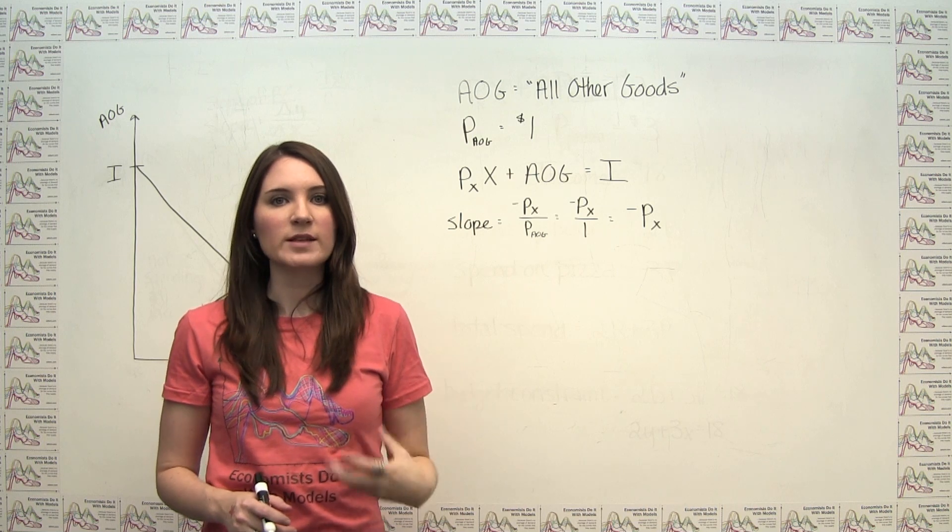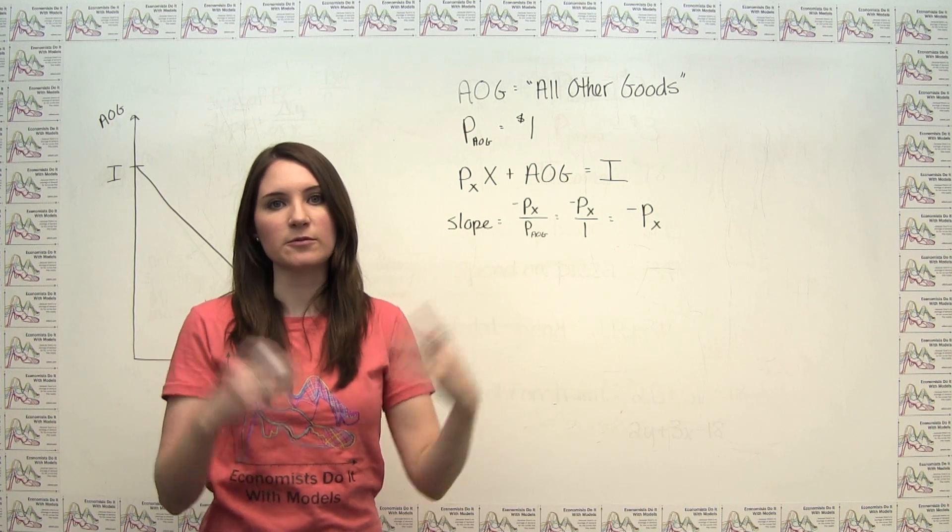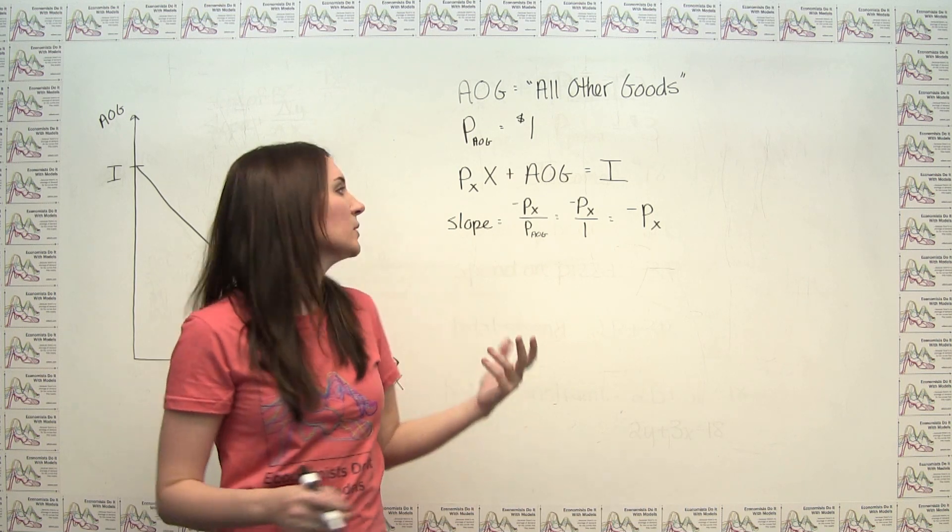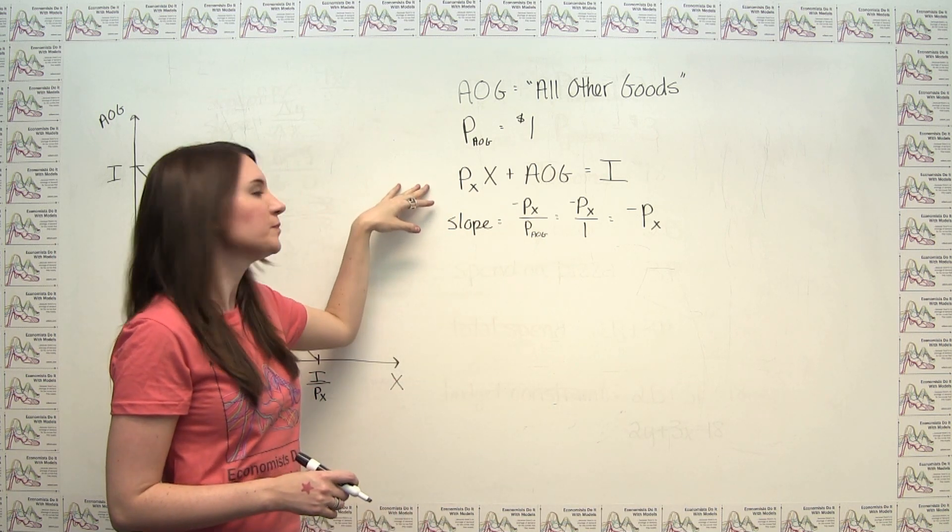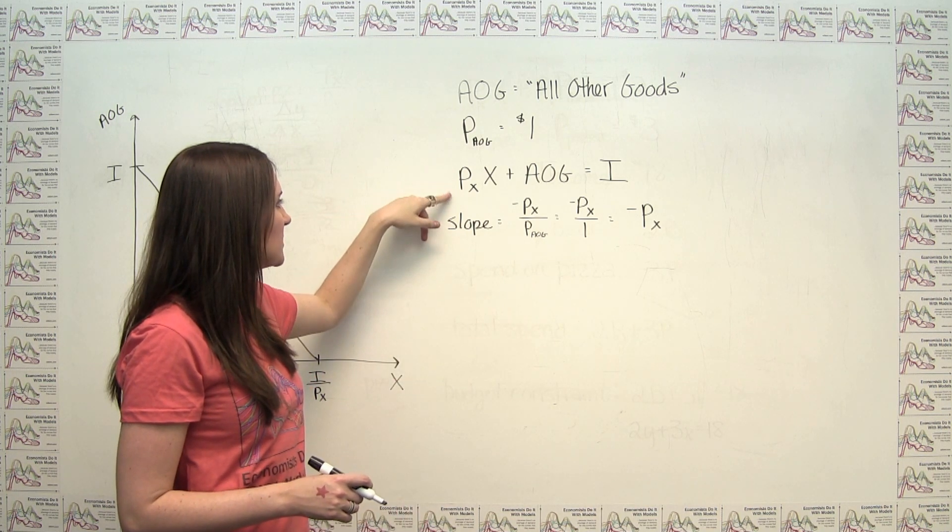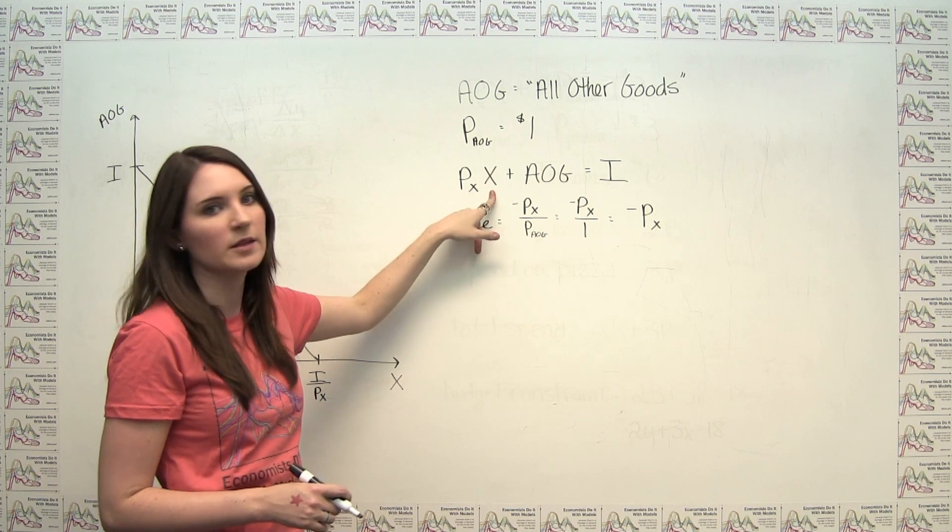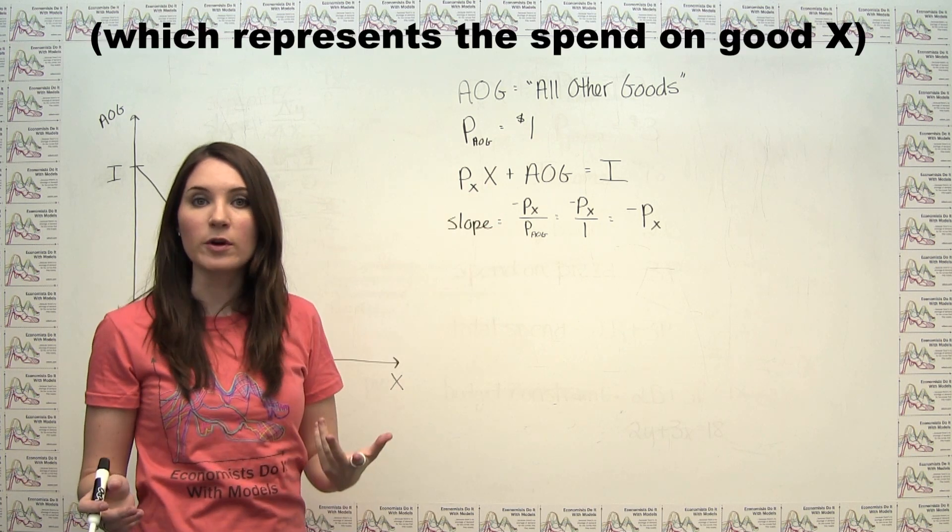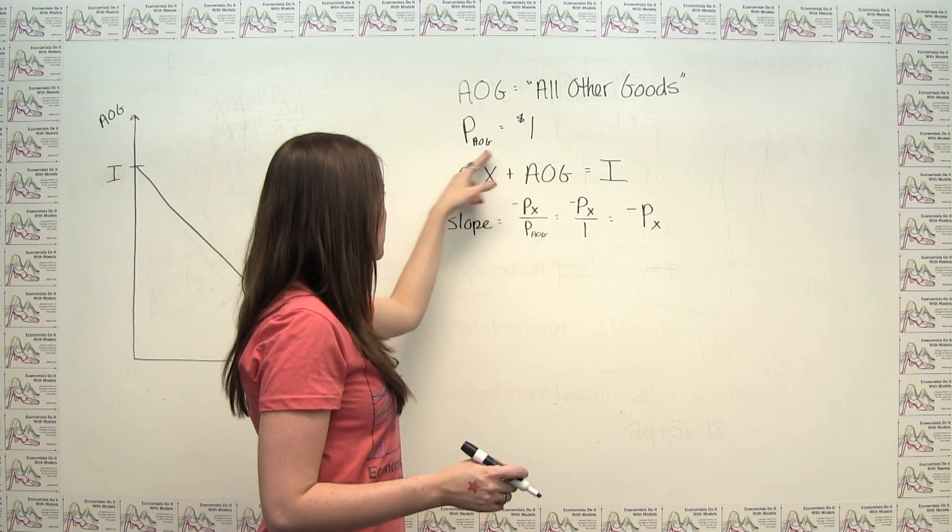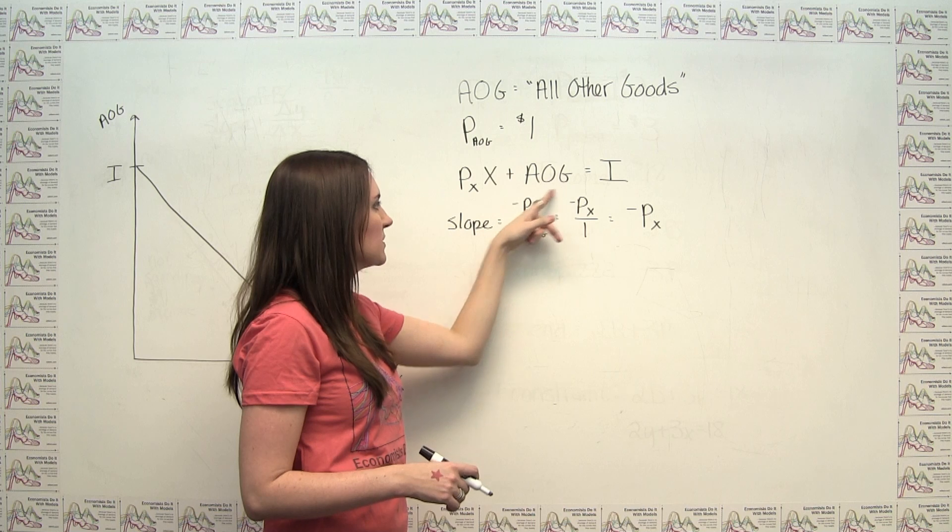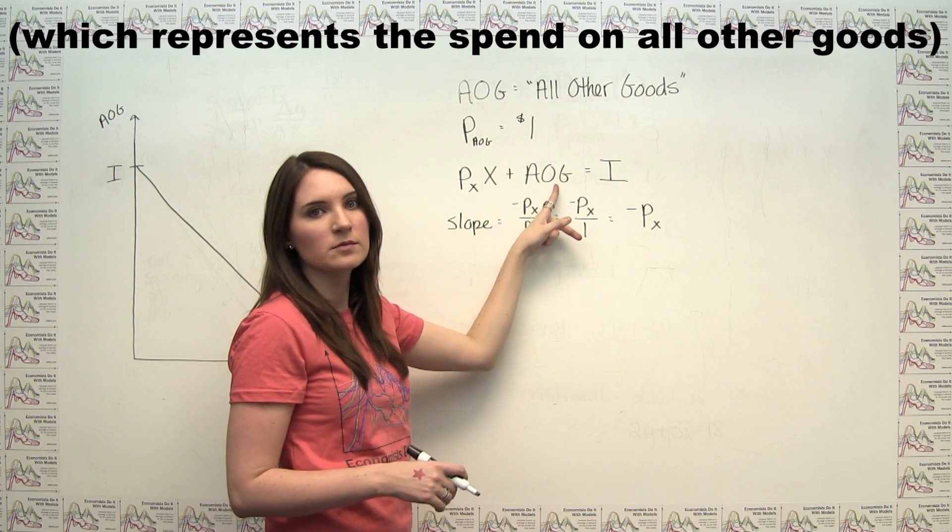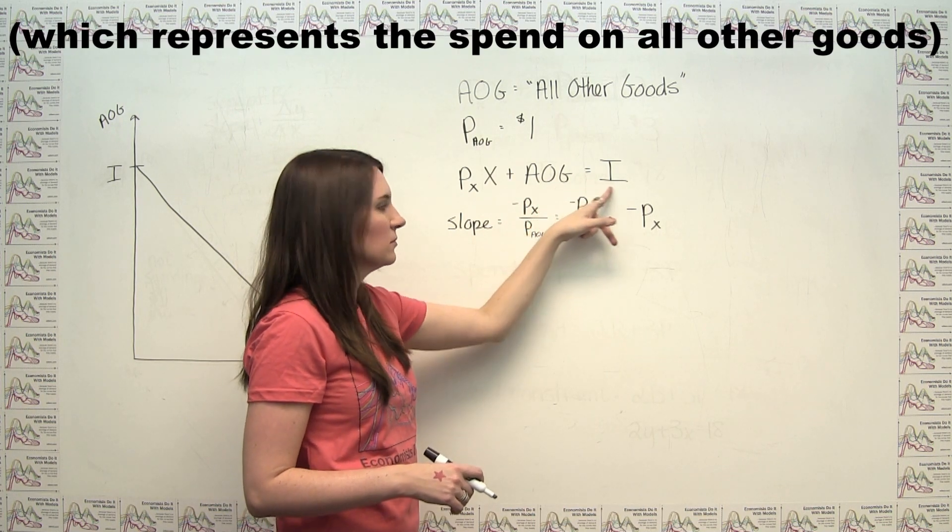So you can say, well, one dollar is just the price of a share in this basket of all other stuff. In which case, our budget constraint simplifies to what we see here. We've got the price of the good on the x-axis times the quantity of the good on the x-axis, just like we had before, plus the price of this all other goods share, which is just one, times the quantity of all other goods, has to equal income.